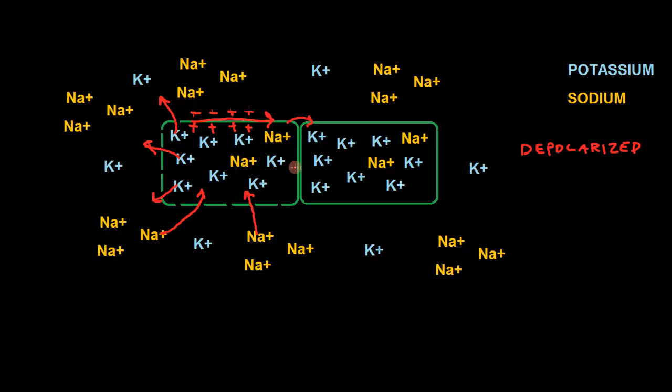Once this is all over with, before we can do it again, we're going to have to move all this sodium that moved in, and we're going to have to move it out, and all the potassium that moved out is going to have to be returned to the inside of the cell. Once again, establishing this ratio such that the inside of the cell is once again negative, and the outside of the cell is positive.